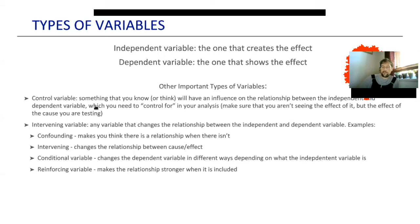The language is difficult, but the concepts are pretty basic. We have two intimidating-sounding names: the independent variable — the one that creates the effect — and the dependent variable — the one that shows the effect. The independent variable is what you manipulate in order to affect the dependent variable.